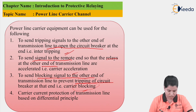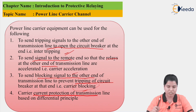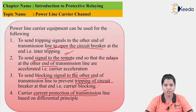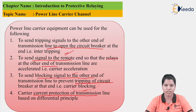Next is carrier current protection of transmission line based on the differential principle. Based on the differential protection of equipment such as differential protection of generator and differential protection of transformer, the carrier line signals can be sent to the transmission lines.